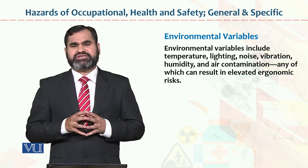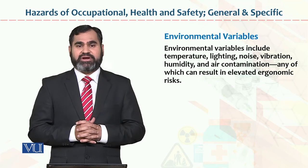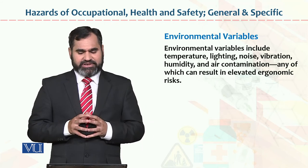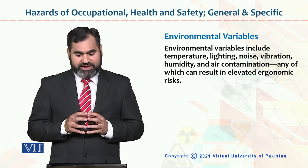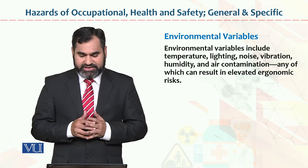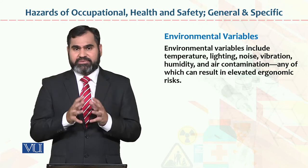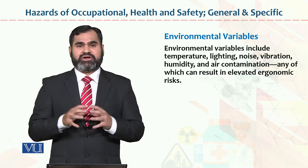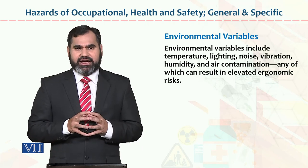اس سے related جو important point ہے وہ ہے environmental variable. کسی بھی organization میں کام اس وقت تک perform نہیں ہو سکتا جب تک کہ وہاں پر cool, calm اور effective environment فراہم نہ کیا جائے. Environmental variables include temperature, lighting, vibration, humidity, and contamination, any of which can result in elevated ergonomic risk. Organization کے اندر surrounding environment کو proper way میں monitor نہ کیا جائے تو مسائل پیدا ہو سکتے ہیں. اگر یہ تمام چیزیں controlled environment میں موجود ہوں، تو environmental variables آپ کی performance کو enhance کرنے کا باعث بنیں گے.